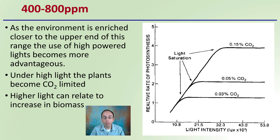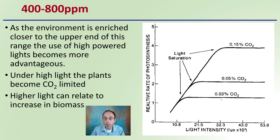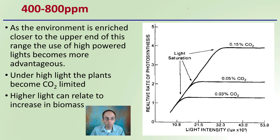Higher light can relate to an increase in biomass. Here we can see light intensity and the relative rate of photosynthesis. The key point is that at different carbon dioxide levels, there is a certain light saturation point. As we increase the levels of carbon dioxide, that saturation point — the light intensity — is increased. At atmospheric or lower CO2 levels, we can get away with lower light, but as we increase carbon dioxide, plants can take advantage of that and increase their photosynthetic rate.